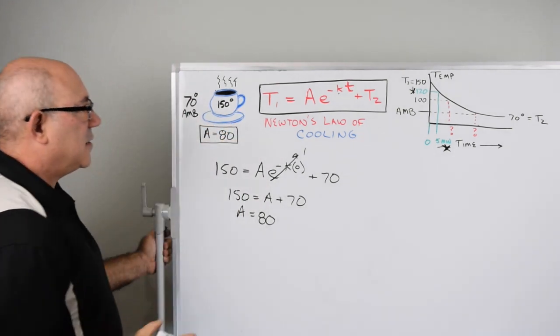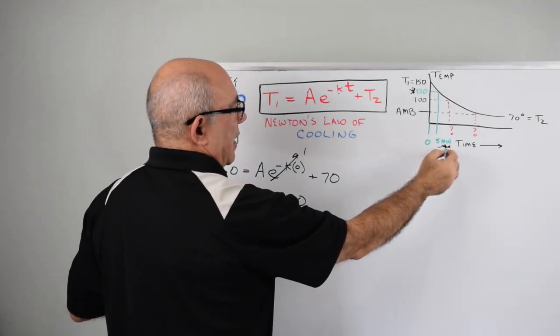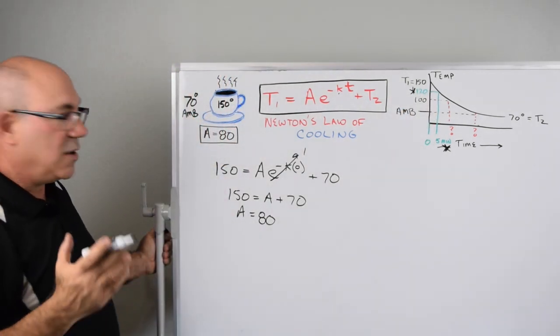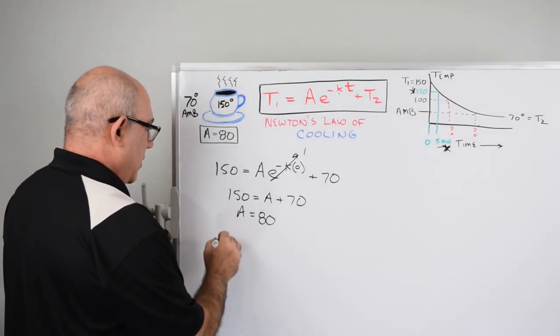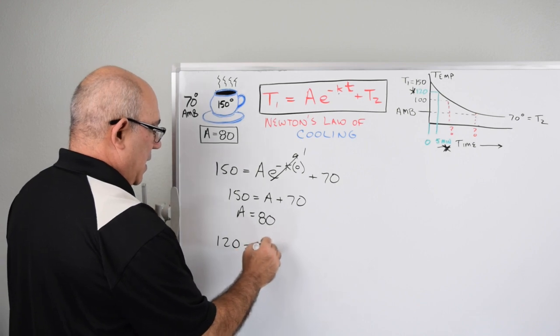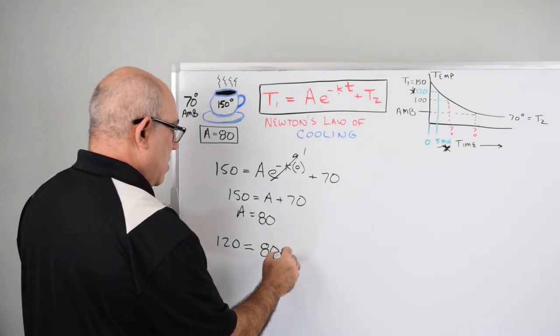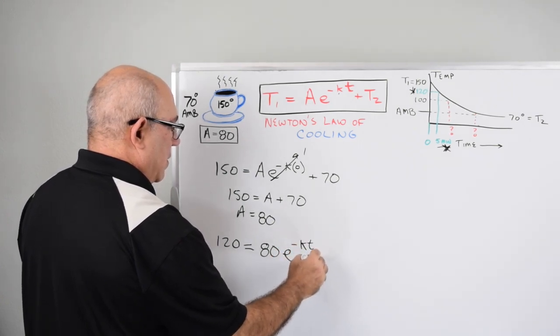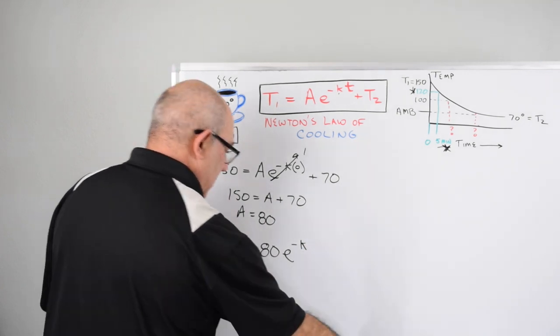Now let's use the second piece of information. At five minutes the temperature is 120 degrees, so we can use that to solve for K. We know the temperature is 120 equals 80 times e to the minus K times time, but we know that time in this case is five minutes, and then we add the 70 degree ambient temperature.